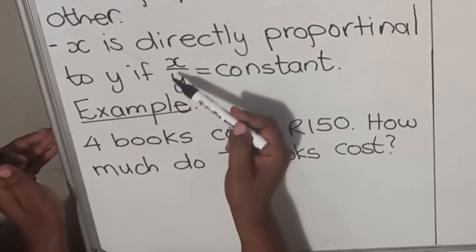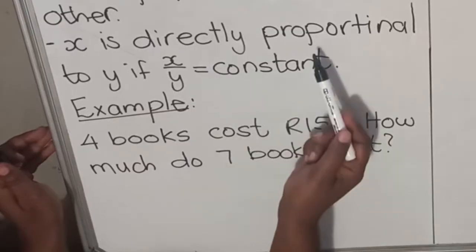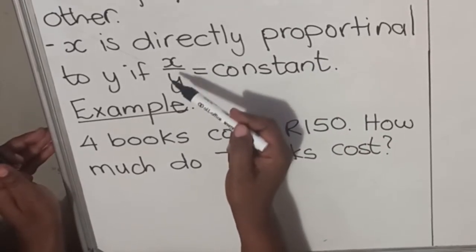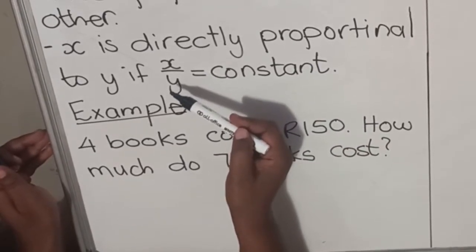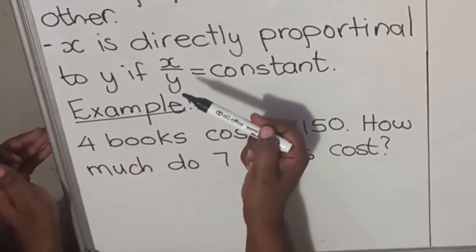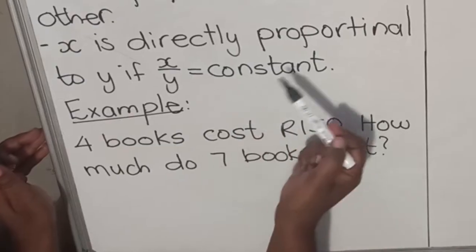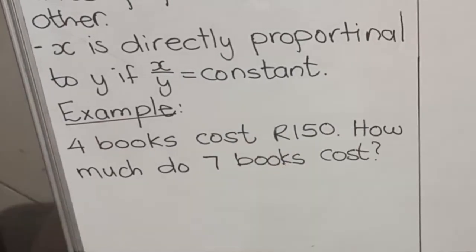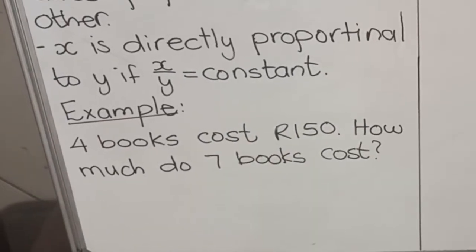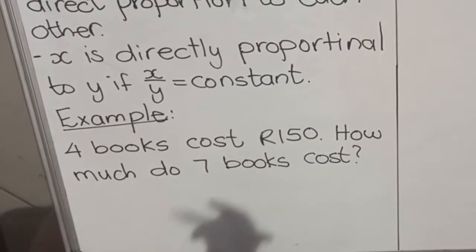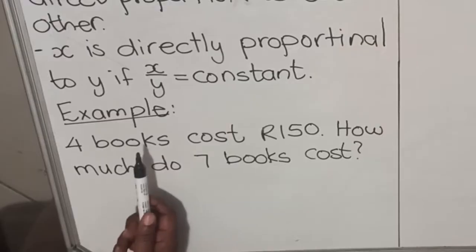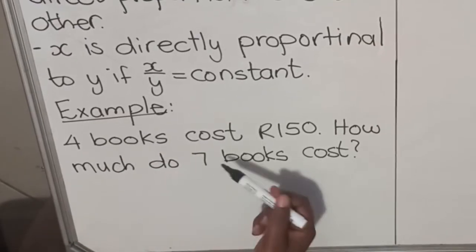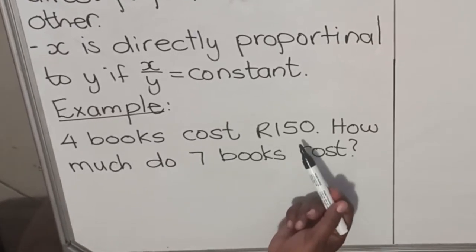So if you divide the two quantities you'll get a constant. When you are dealing with direct proportion you divide the two quantities, and when you're dealing with inverse proportion you multiply the quantities. Let's look at an example: four books cost 150 — how much do seven books cost?